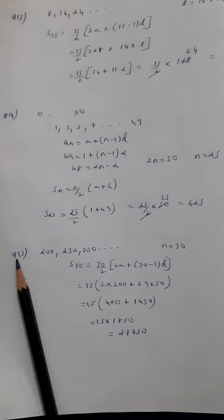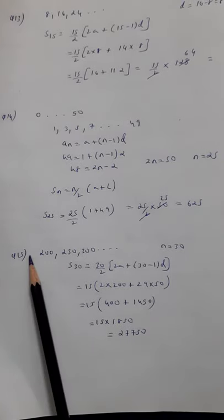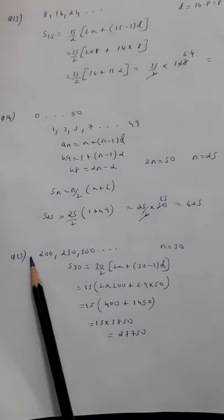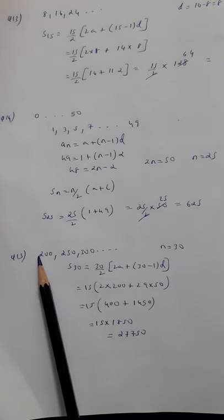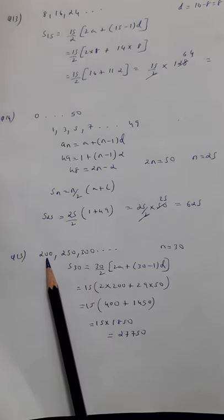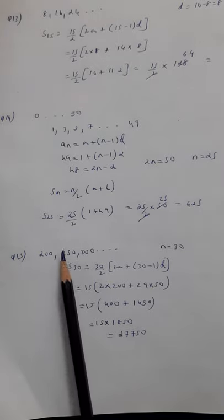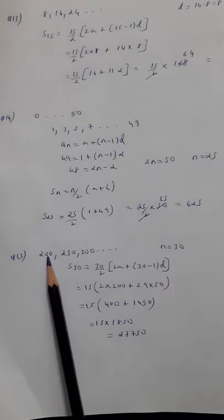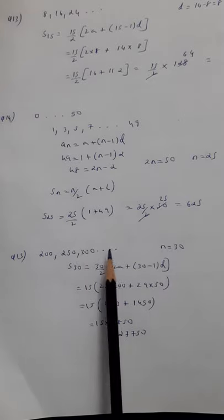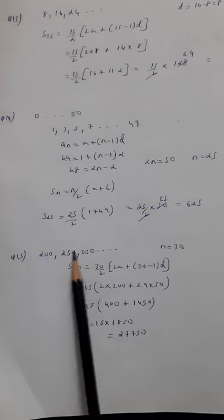Question number 15. So from the problem you can read the question and easily find out that this is an arithmetic progression. There is a construction company, there is a fine. The fine is increasing by 50 rupees every subsequent day.